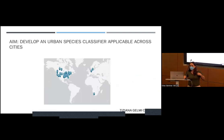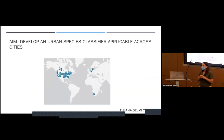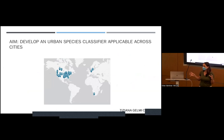The aim of me being here was to create an urban species classifier that was useful across cities. Of course we couldn't start with multiple cities — we started with one, with Toronto.